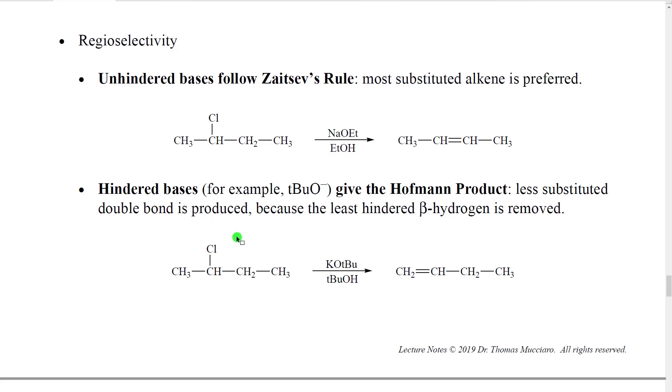We also talked about the regioselectivity of this reaction. Regioselectivity occurs when there are two different beta carbons that could each provide a hydrogen and would give different products that are constitutional isomers of each other. It turns out there was a rule which determined which beta carbon would be preferred. It was called Zaitsev's rule: the most substituted alkene would be preferred.